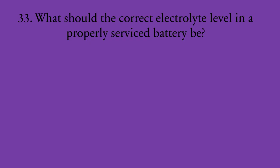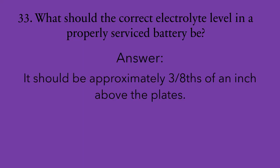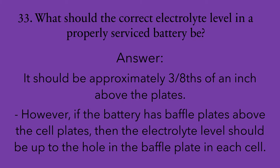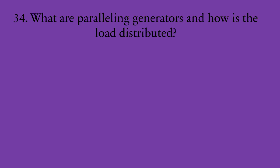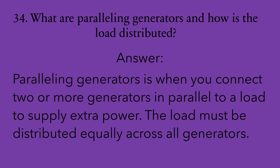Number thirty-three: what should the correct electrolyte level in a properly serviced battery be? It should be approximately three-eighths of an inch above the plates. However, if a battery has baffle plates above the cell plates, then the electrolyte level should be up to the hole in the baffle plates in each cell. Number thirty-four: what are paralleling generators, and how is the load distributed? Paralleling generators is when you connect two or more generators in parallel to the load to supply extra power. The load must be distributed equally across all generators.